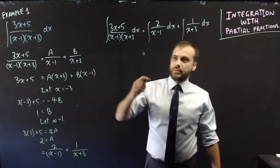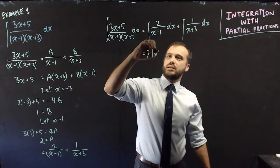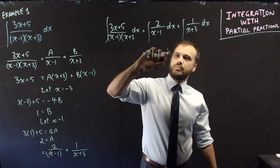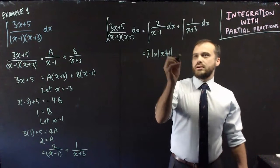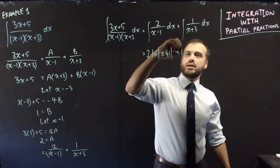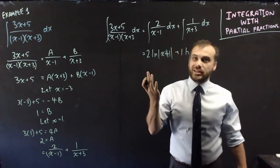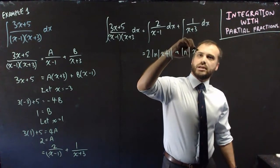Both of these follow similar patterns. We have 2 ln x minus 1 there, plus 1 ln or just ln x plus 3.